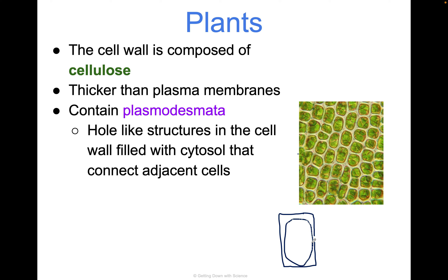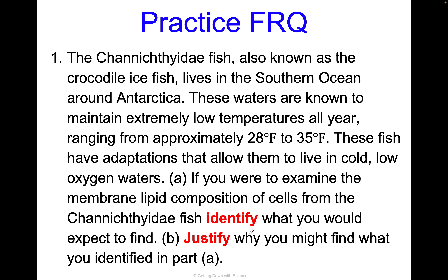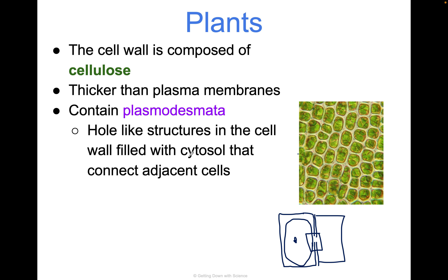Plants contain structures called plasmodesmata — one of my favorite science words. Plasmodesmata are hole-like structures in the cell wall filled with cytosol that connect adjacent cells. You'll have a cell wall with a little gap in it, and right next to it another cell — they stack on top of each other. The plasmodesmata is the hole that connects adjacent cells through the cell wall.